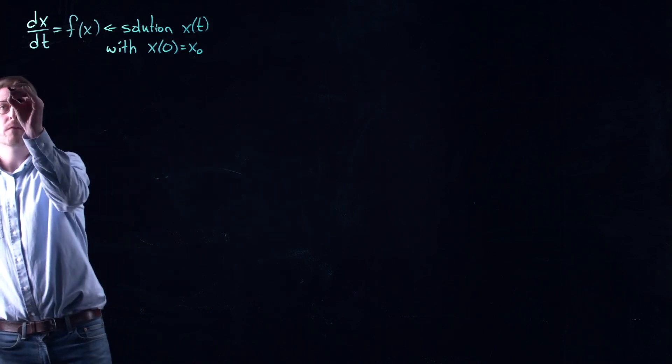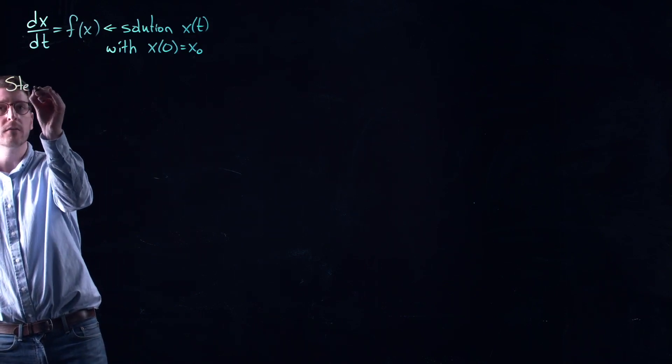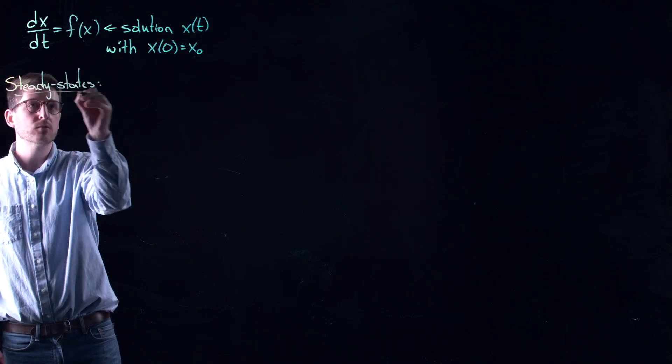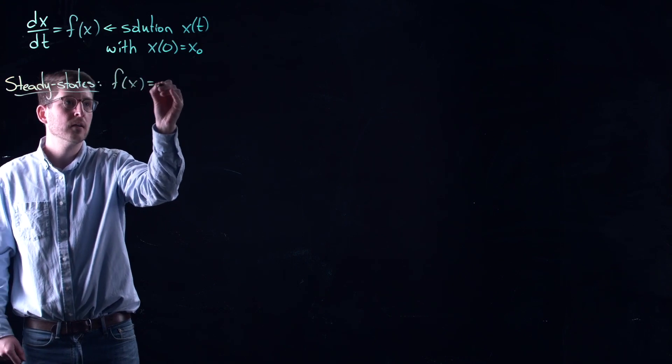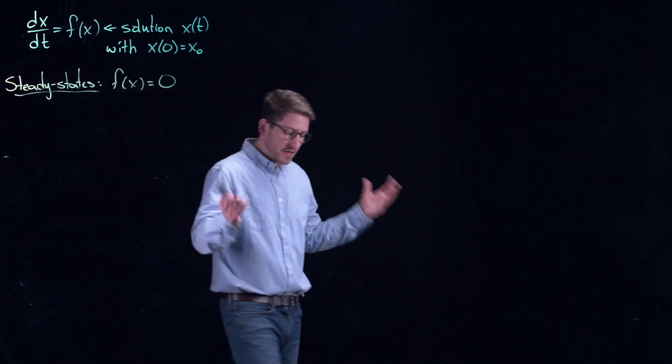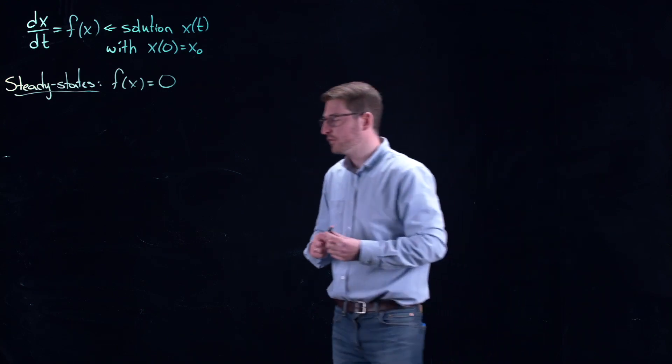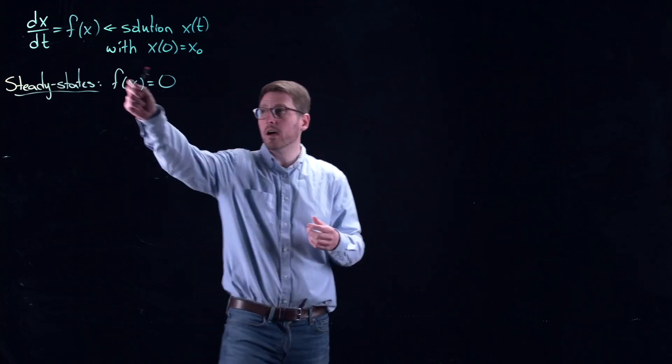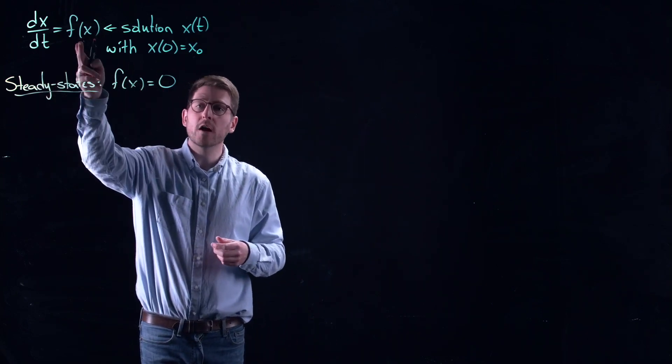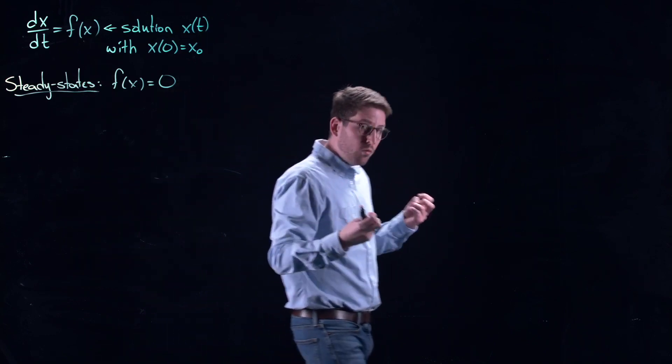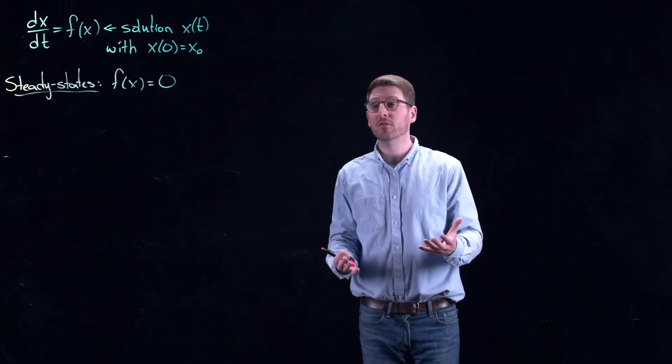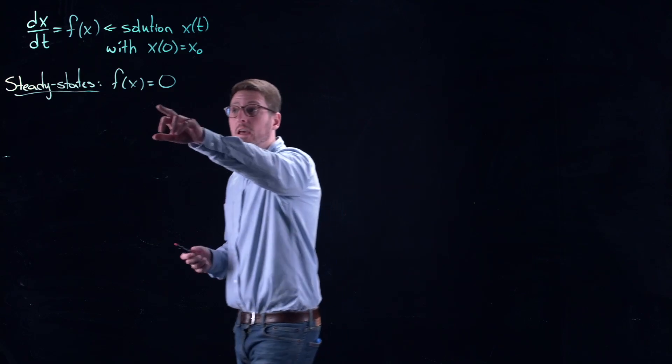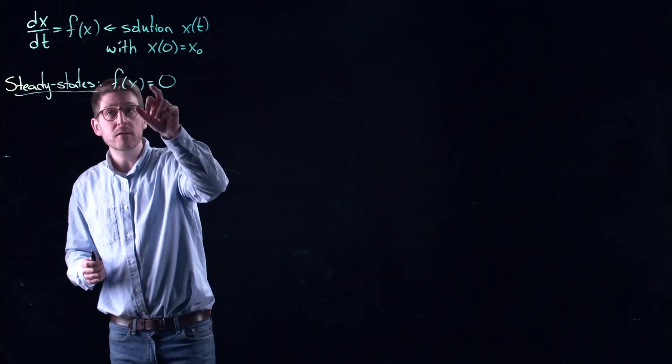So how do we do this? Well the first thing we do is we remind ourselves that when we try to analyze a dynamical system it typically starts in this way. We start by solving for the steady states. Now remember the steady states are where you don't change in time, which means you are setting the left hand side of this differential equation equal to zero, which means you are trying to find the roots of a function. So you can see Newton might be helpful for you again. Newton's method is not just useful for optimization problems. In this case finding steady states is a root finding problem again.